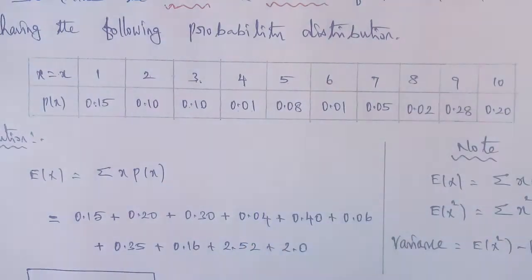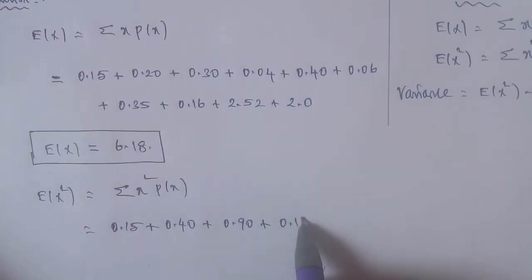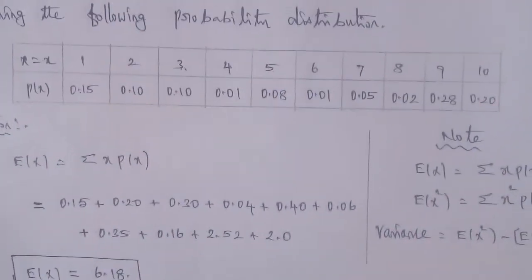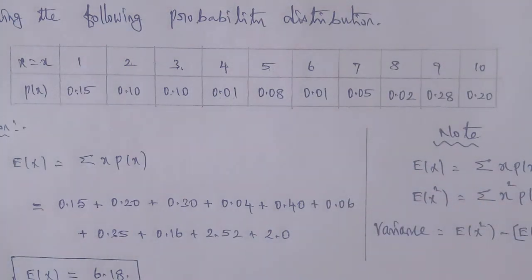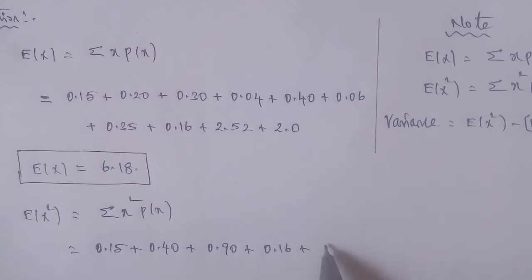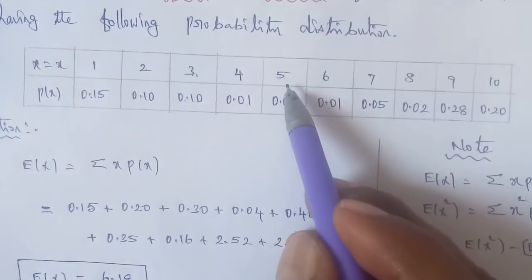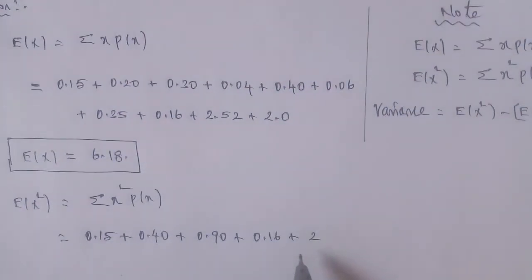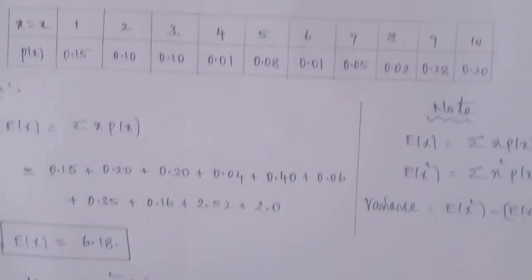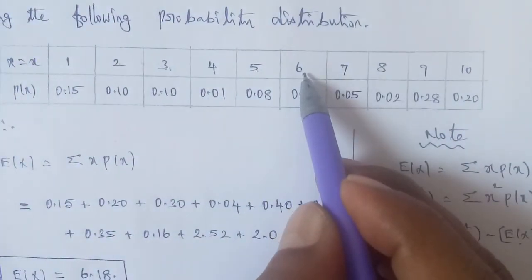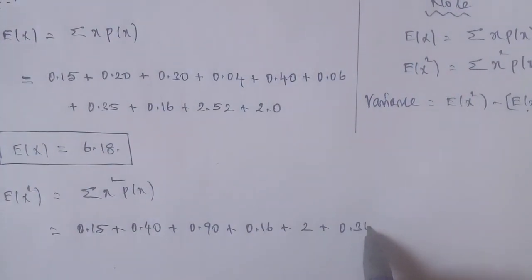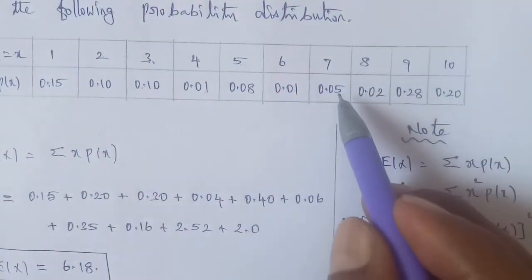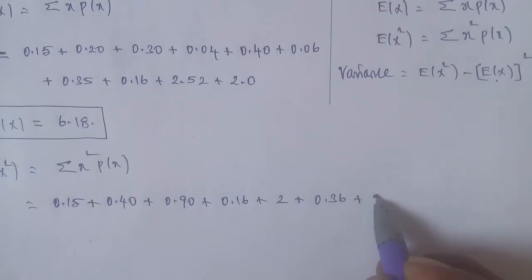For x = 4: 4² = 16, 16 × 0.01 = 0.16. For x = 5: 5² = 25, 25 × 0.08 = 2.00. For x = 6: 6² = 36, 36 × 0.01 = 0.36. For x = 7: 7² = 49, 49 × 0.05 = 2.45.